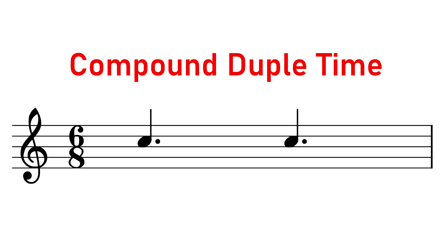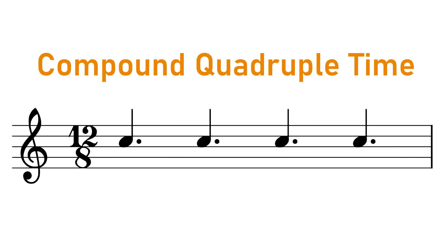There are just a couple more common points of confusion with 3/4 and 6/8 to cover. The first is: what's the difference between 6/8 and 12/8? Whereas 6/8 is compound duple time — two strong beats in a bar, each dividing down into three eighth notes — 12/8 is compound quadruple time: it has four strong beats in a bar, and once again they divide down into three eighth notes.